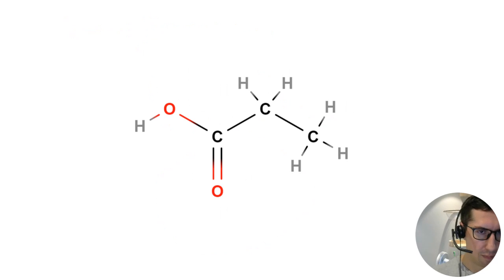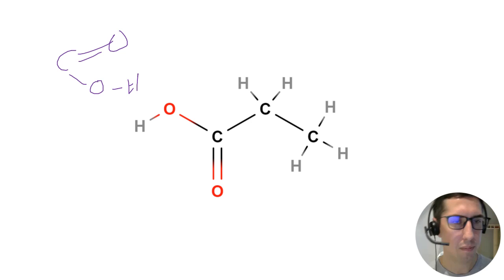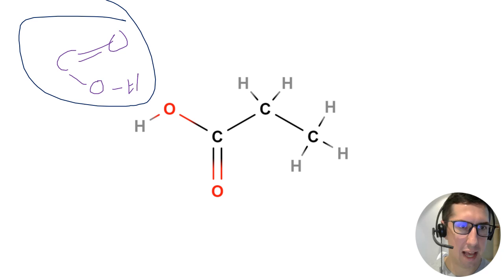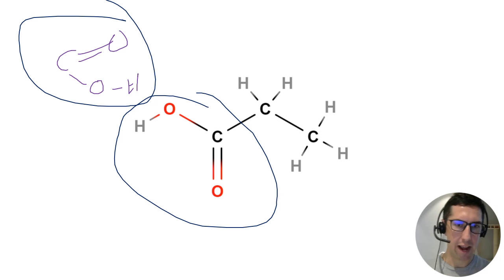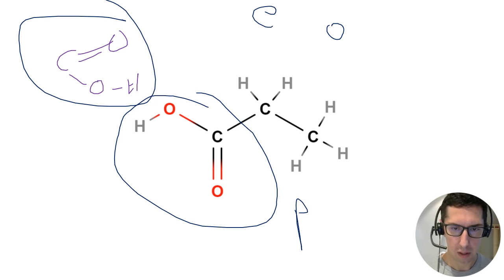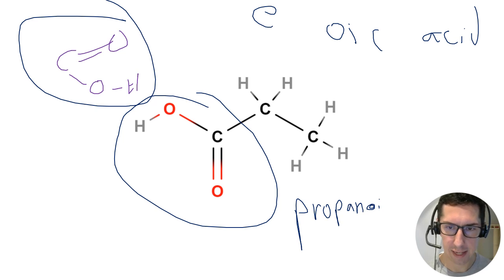This is a carboxylic acid. The functional group is a carbon with a double-bond oxygen and then an O-H. Although it contains an O-H, when it's attached to a carbon with a double-bond oxygen we call it a carboxylic acid, not an alcohol. The carboxylic acid carbon is always at the end of a chain. For this three-carbon molecule, drop the E from 'propane' and replace it with 'oic acid'. This gives propanoic acid.